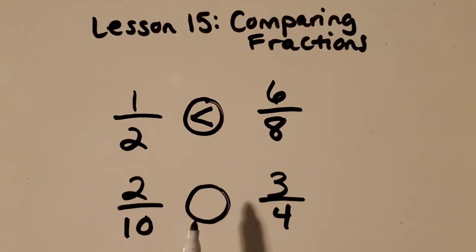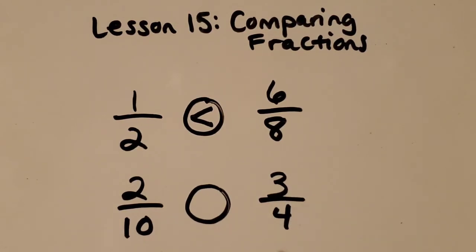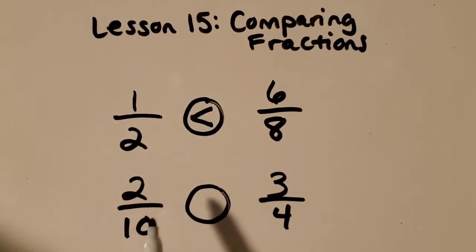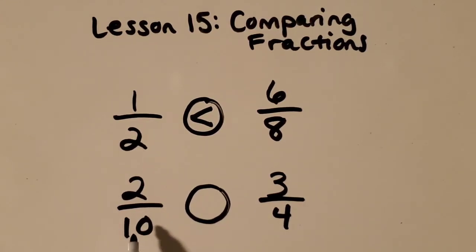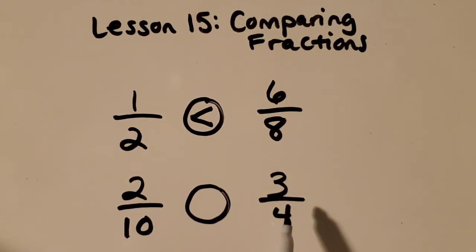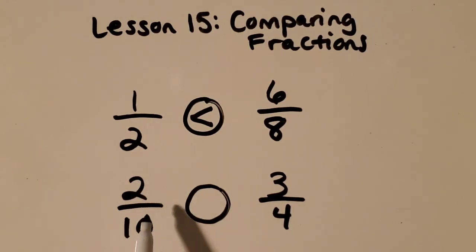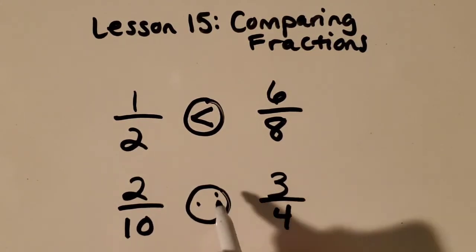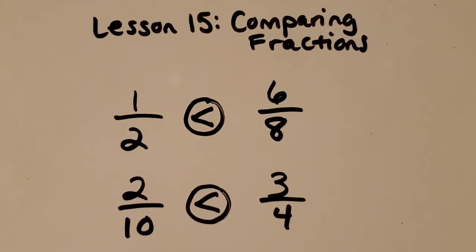Here's another one where we don't necessarily need a picture, and I'll show you why. We've got two-tenths compared to three-fourths. So if we use our fraction sense of thinking about halves, we might be able to tackle this one without a picture. What is half of ten? Good, it's five. So five-tenths would be a half. What is half of four? Good, two. Two-fourths would be equivalent to a half. So two-tenths is less than a half, and three-fourths is bigger than a half. So two-tenths has got to be the smaller fraction — we give it one dot, and three-fourths gets two dots. See how you can use things mentally to figure out which fraction is bigger.